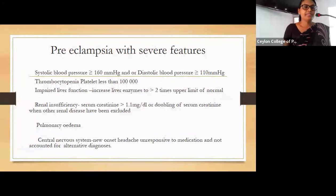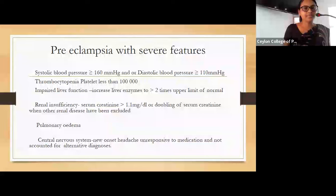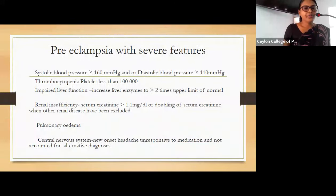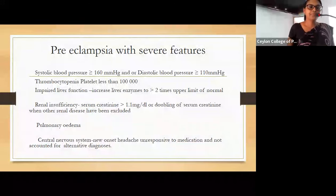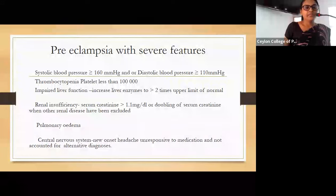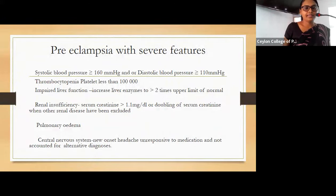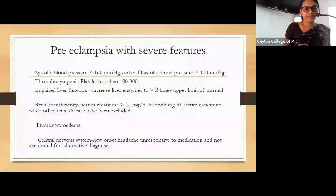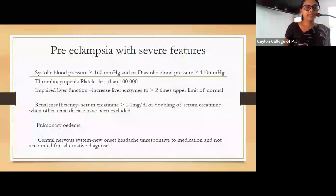Severe features of preeclampsia include systolic blood pressure more than or equal to 160 mmHg and/or diastolic blood pressure more than or equal to 110, thrombocytopenia with platelet count less than 100,000, impaired liver function with liver enzymes more than two times the upper limit of normal, renal insufficiency with serum creatinine more than 1.1 mg per deciliter or doubling of creatinine without other renal disease, pulmonary edema, and CNS involvement with new onset headache not responding to medication and not explained by any alternative diagnosis.